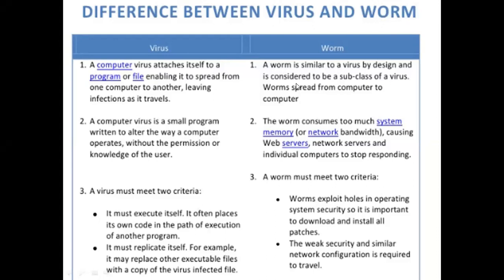What is a virus? A virus is a computer program that attaches itself to a legitimate program and files without the user's consent. A computer virus attaches itself to a computer program or a file, enabling it to spread from one computer to another, leaving infections as it travels. The virus can travel from one system to another through the network or through any memory devices, corrupting files and memory details.